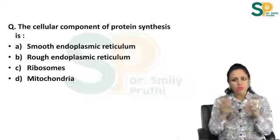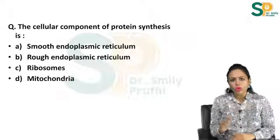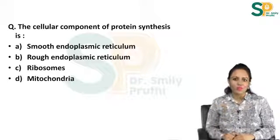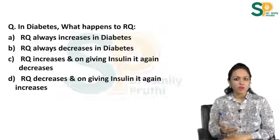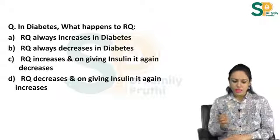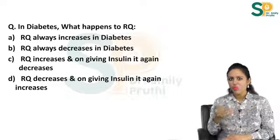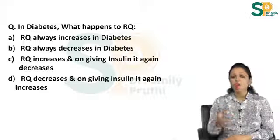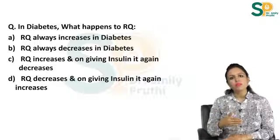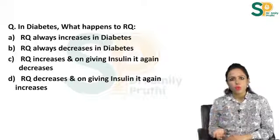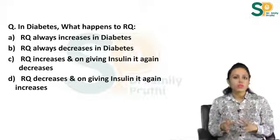Suppose you read a question and think option A is correct — never stop there and skip reading the rest. They check whether you are reading all options or not. Another example: in diabetes, what happens to RQ (respiratory quotient)? Option A says it increases; option B says it always decreases. But when you read all options, option D says RQ decreases, and on giving insulin it increases again — which is the correct answer, because insulin allows glucose to enter cells and carbohydrate metabolism resumes. My point is: always read all the options.